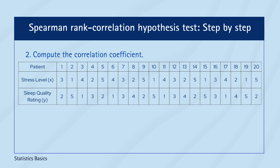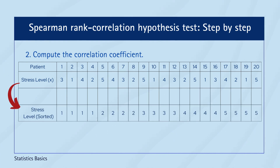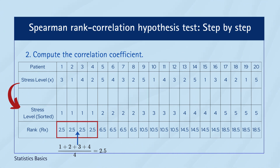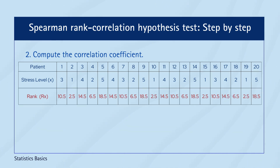For repeated data points, we will assign the average rank. Considering the stress level, sort the data points from 1 to 20 and then assign the average rank for repeated data points. The first four data points are 1, so we assign the average of ranks 1, 2, 3, and 4 to those sorted data points. Similarly, average ranks are assigned for all other repeated data points. Then place these ranks for the corresponding stress level back in the original unsorted stress level row.